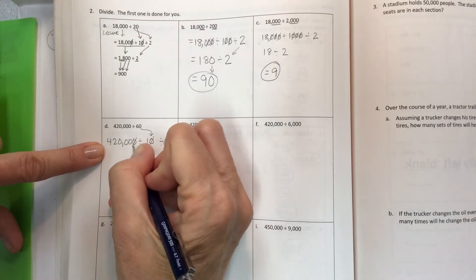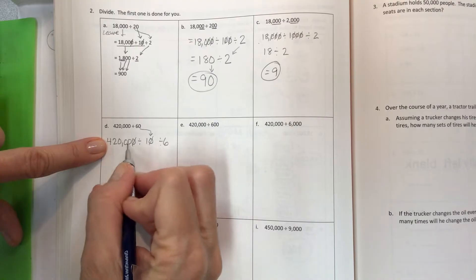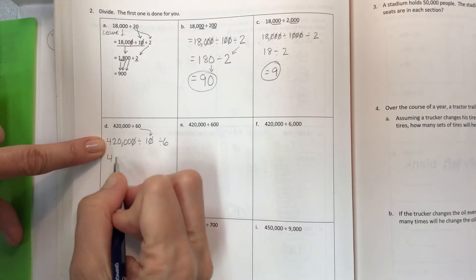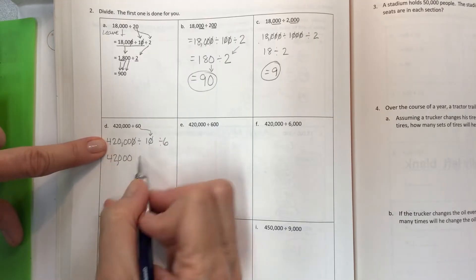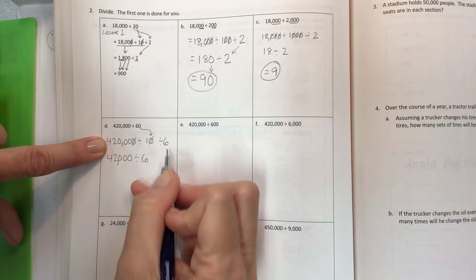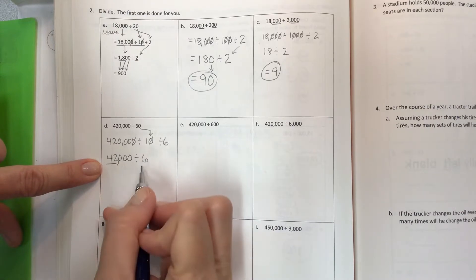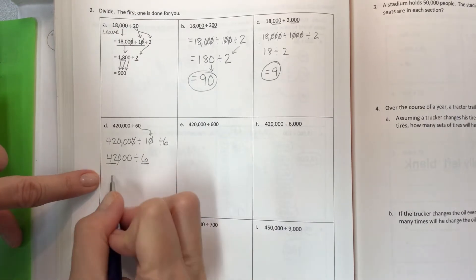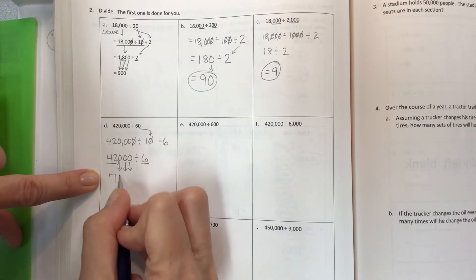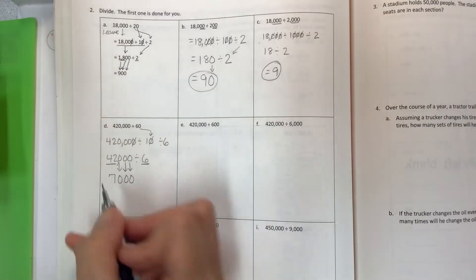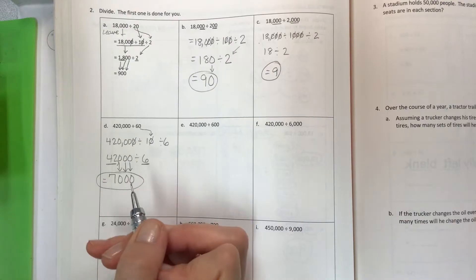Take off the 10 from both sides right here. Copy what's left: 4, 2, 0, 0, 0. So it's 42,000 instead of 420,000. Divided by 6. Here's your quick fact: 42 divided by 6 is 7, and then these zeros all come down because they all hold a place value position to give you 7,000 for your answer.